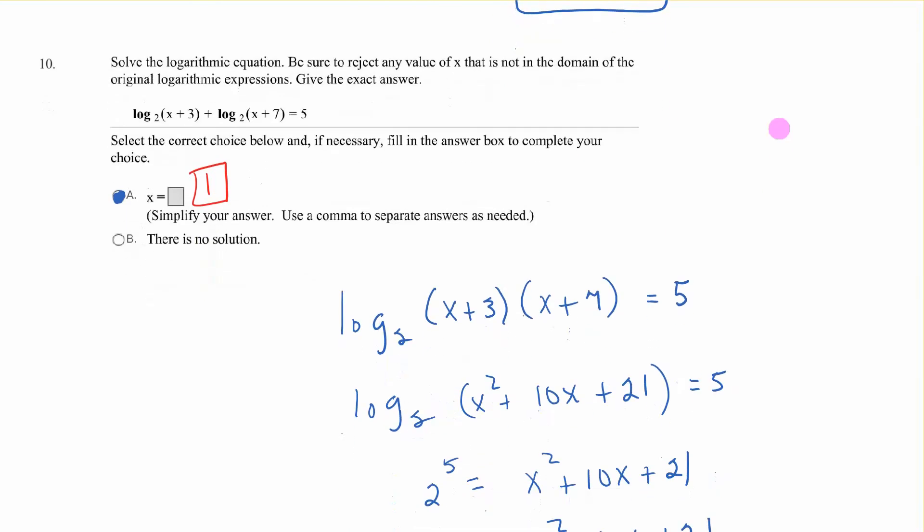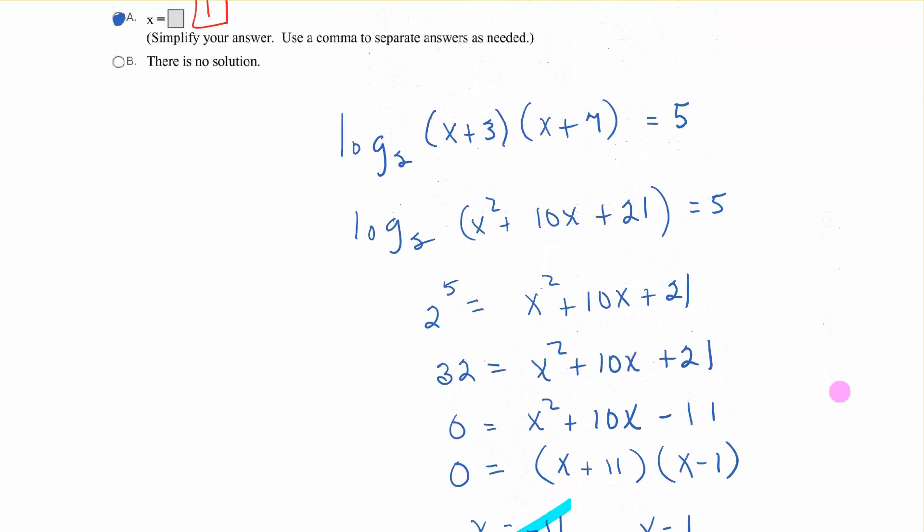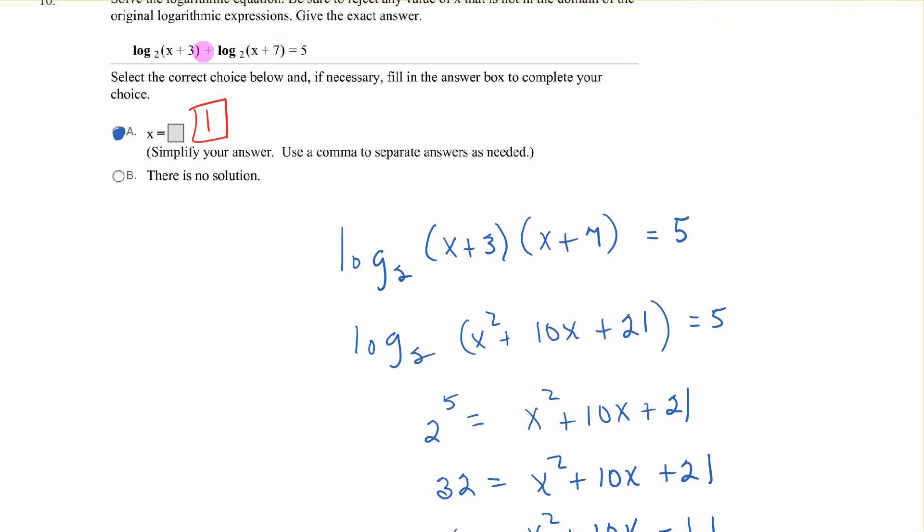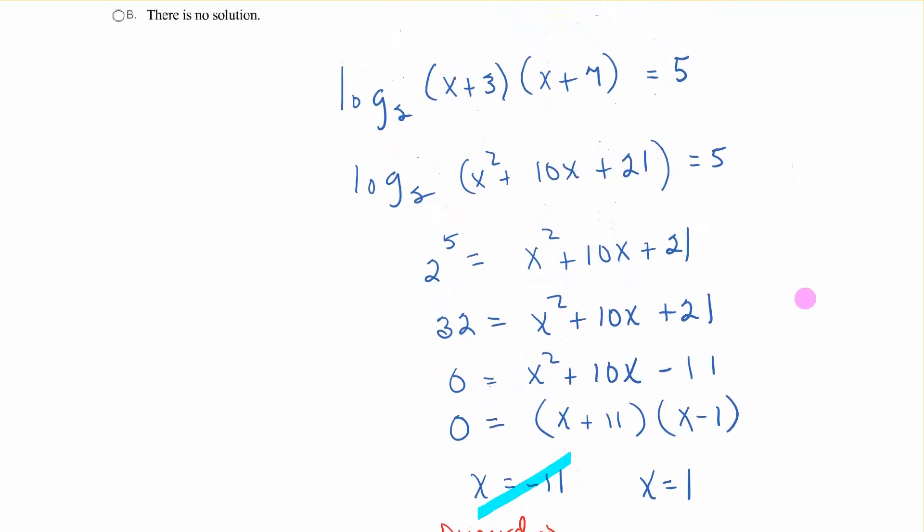Solving this log equation. We have log base 2. These were added, so we're going to make this a product. And then we're going to multiply these out. x squared plus 10x plus 21. Then we're going to switch it to exponential. And so that becomes 2 to the fifth equals this. 2 to the fifth is 32. We'll subtract that over there. So x squared plus 10x minus 11. And we factor that. We get x plus 11, x minus 1. So x is negative 11, x is positive 1. But we cannot plug in negative 11 to either of those because you would be taking the log of a negative value in the parentheses. So we only have x equals 1.